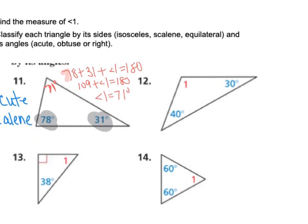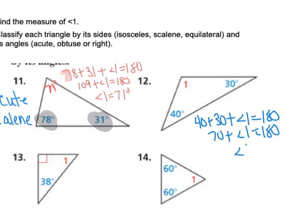Let's look at the second one. We have 40 degrees plus 30 degrees, so: 40 plus 30 plus angle 1 equals 180. That's 70 plus angle 1 equals 180, so angle 1 is 110 degrees. For classifying by its angles, it has an obtuse angle of 110 degrees, so it's obtuse. And none of the sides are the same — 110, 30, and 40 — which would make it scalene.